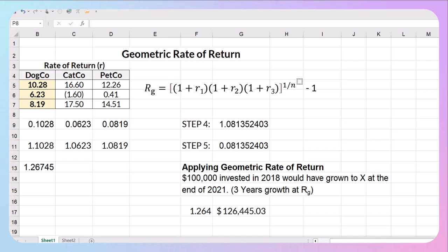So applying that geometric rate of return at the end of three years my $100,000 would have grown to $126,445 and three cents. So hope this helped and thanks for watching.